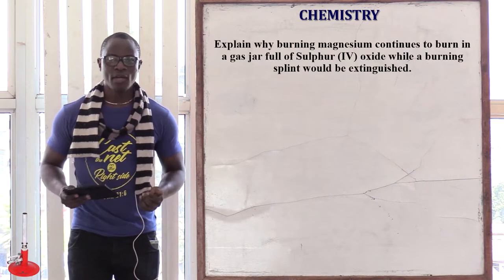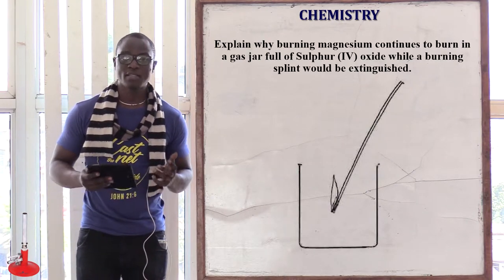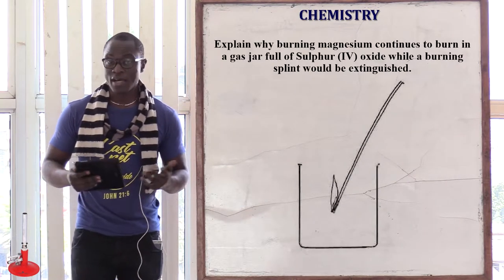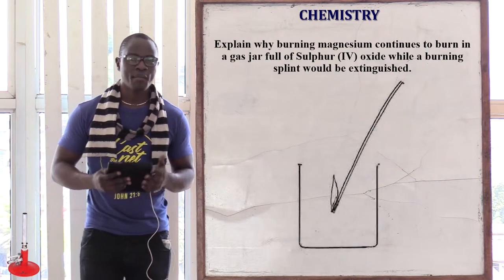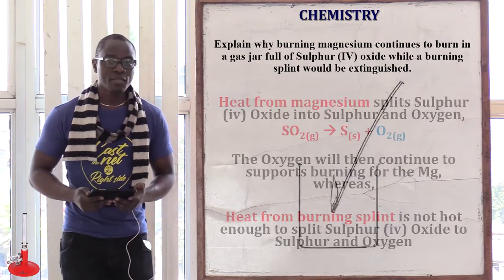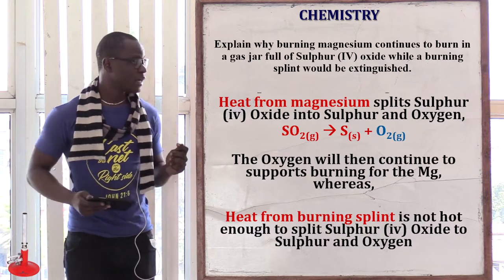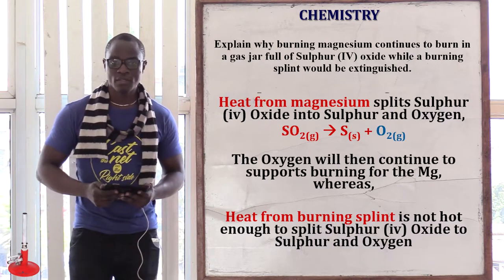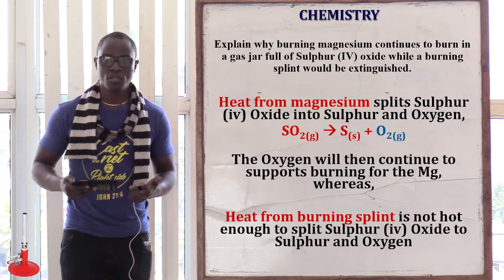The first question asks: explain why burning magnesium in sulfur dioxide continues to burn, but a burning splint will be extinguished immediately. When magnesium is burning it produces a lot of energy. This energy is responsible for breaking down the sulfur dioxide to sulfur and oxygen molecules. Magnesium then uses the oxygen molecules that have been produced in order to continue with combustion.